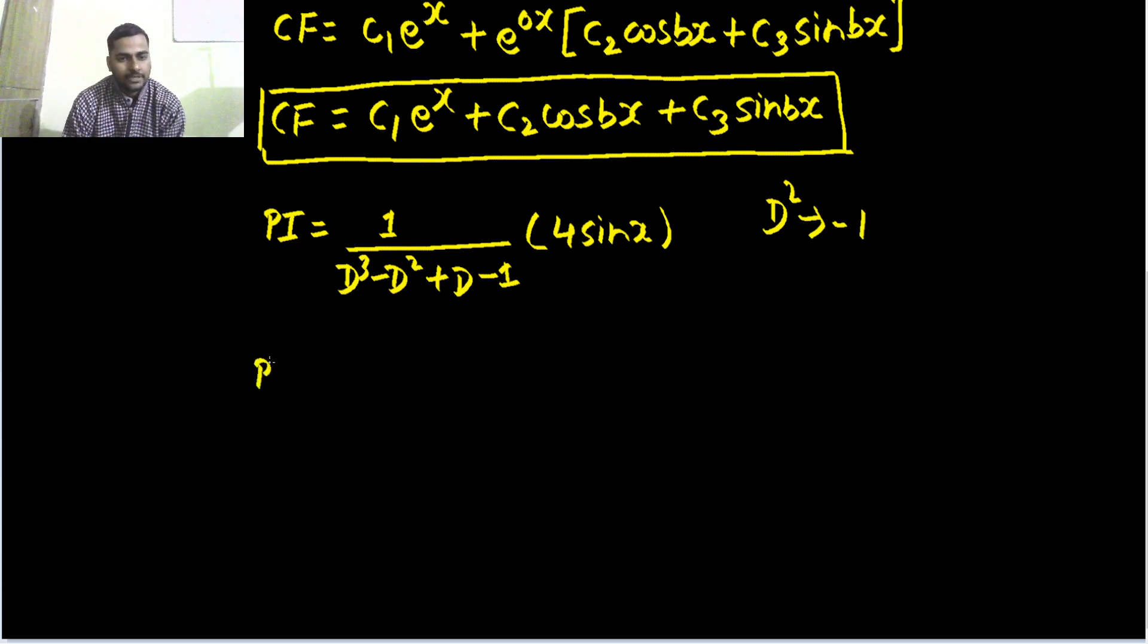So let's do that. Particular integral is 4 comes out, this can be written as D²·D. D² can be replaced by -1 times D so you get -D. Again this D² is replaced by -1, 1 minus is also there so plus 1. This D remains as it is, this -1 remains as it is. As you can see this is a case of failure because you are getting denominator as 0.